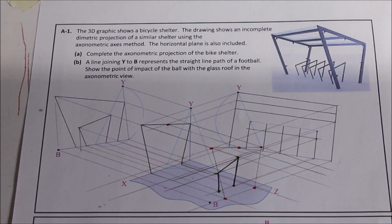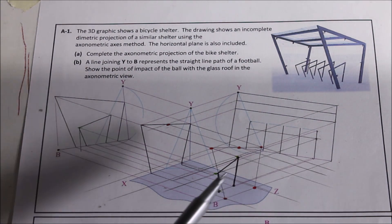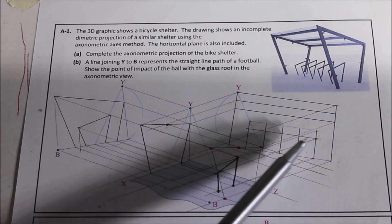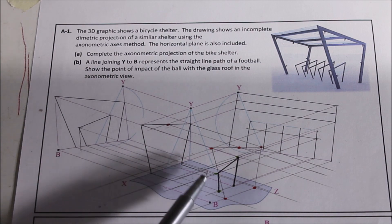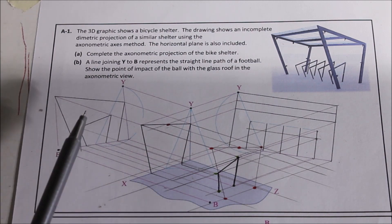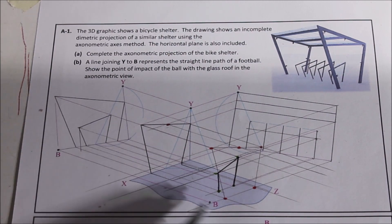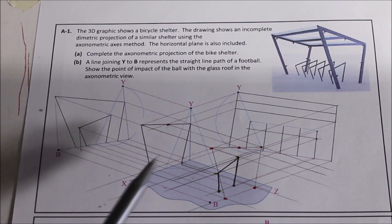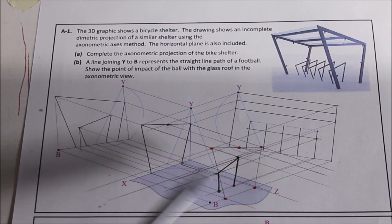So that's our first bike rack done. Once we have the first one done, all we need to do is project down the same points back to the same projection lines from the end view, and it'll give us the rest. I'll mark the different points first, then draw them in strong.